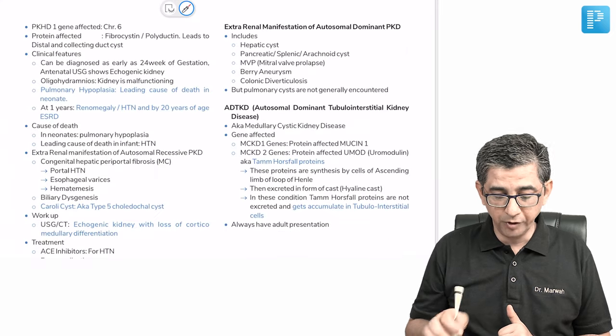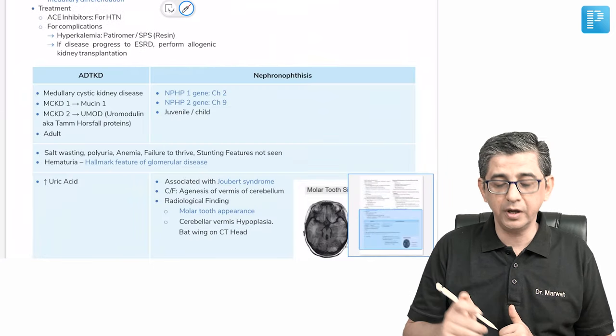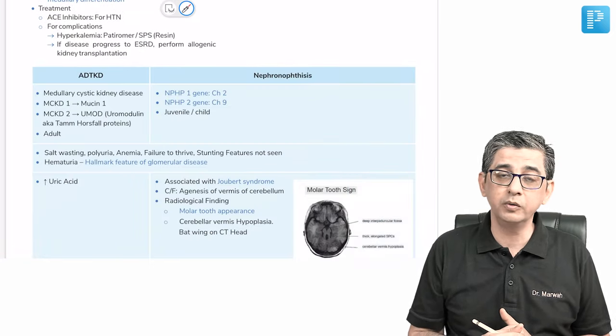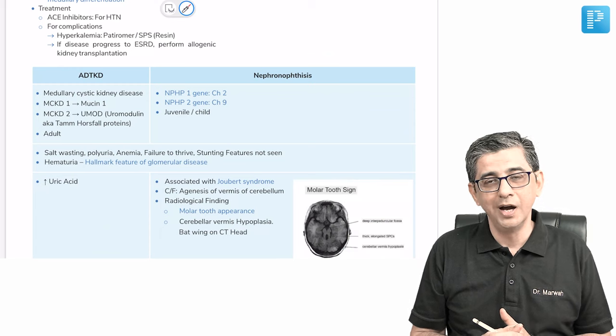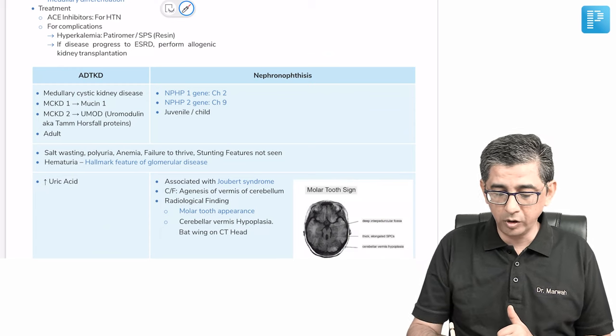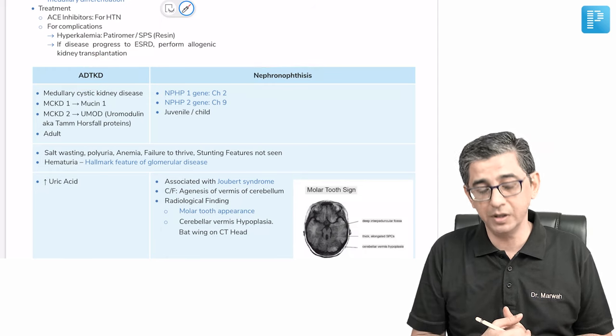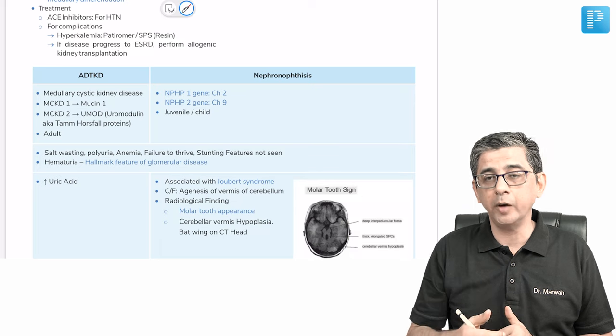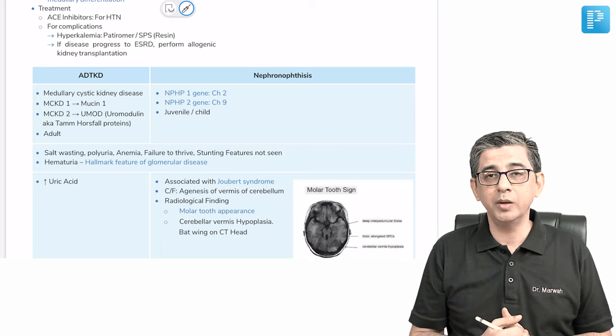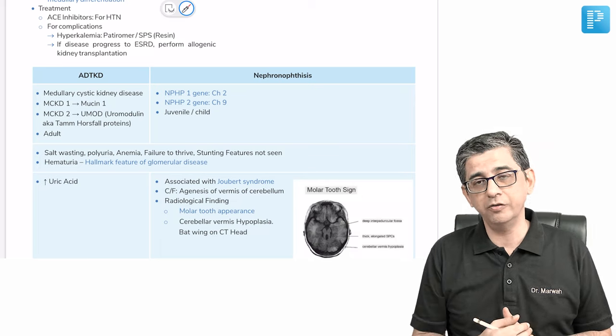As we move forward in the notes, you'll also notice that the information, especially with respect to topics which have those tongue-twisting names like nephronophthisis in comparison with ADTKD—autosomal dominant tubular interstitial kidney disease—they've been given in a tabular format so that you're able to solve those all-except kind of questions.